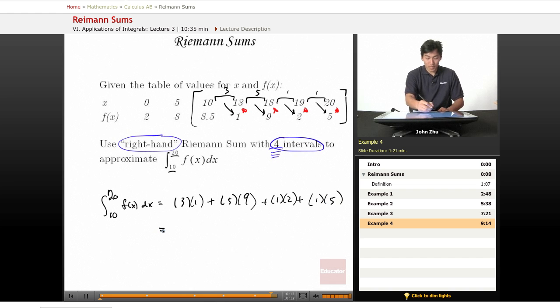And altogether, we get 55, which is a higher approximation. So the right-hand rule is a higher result than a left-hand rule, which means our graph most likely is an increasing function.